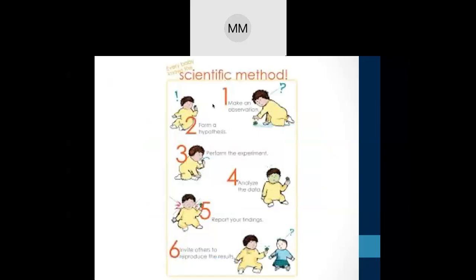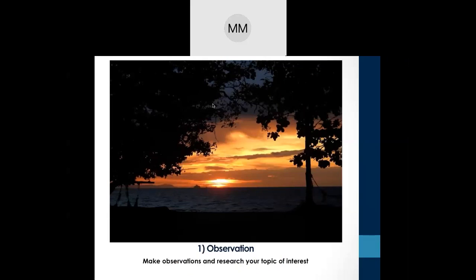Without realizing it, scientific method has been with us since we were babies — we were born as young scientists. A toddler senses its surroundings with its eyes, nose, hands, and senses — it's already forming its own hypothesis. The next step is performing an experiment by tasting something, and the reaction is your data analysis. Then you report your findings to other children, to see if they get the same effects — like if a baby finds a lime sour and wants to share that discovery.